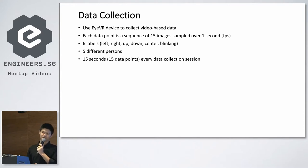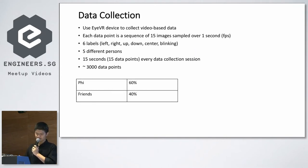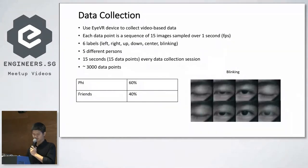Each session of data collection lasts 15 seconds. Within 15 seconds you have to look at one direction or do the same action. After that, 15 data points are created. This is a very expensive, health-damaging process that I'm not going to encourage. After a very long time of data collection, I only got 3,000 data points. This is what the data looks like - a sequence showing blinking where some images are closed and some are open.